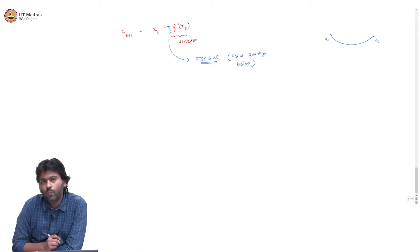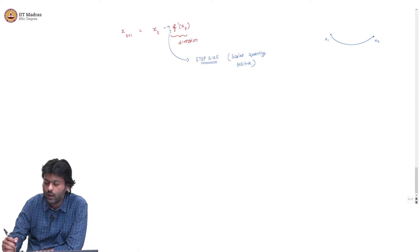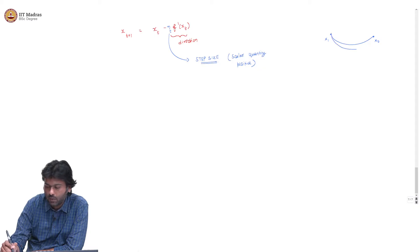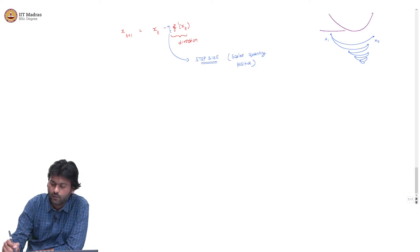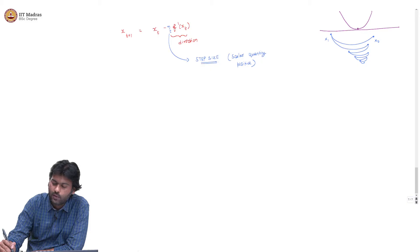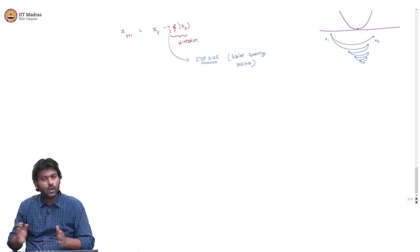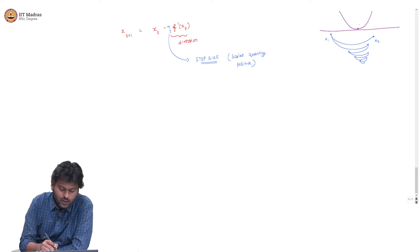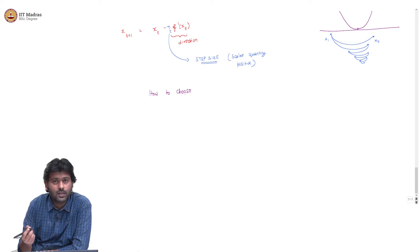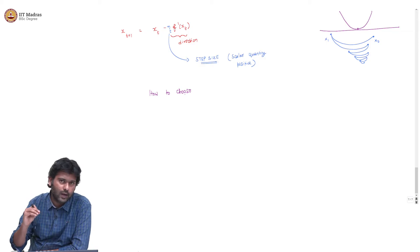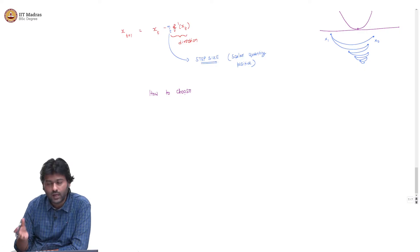You start with 1, go somewhere. Then maybe you should not take a step of 1 again from this new point. Maybe you take only a smaller step, then an even smaller step. If you keep doing that, hopefully you will converge to the minimum. So you don't want to take the same step size in each round, but you want to somehow minimize the oscillation problem.